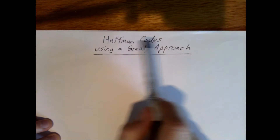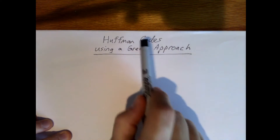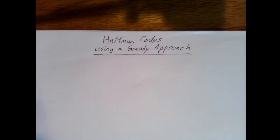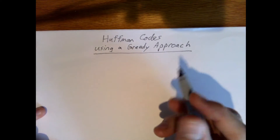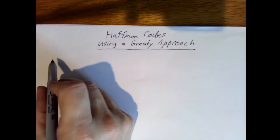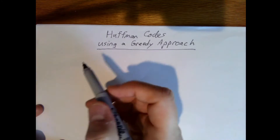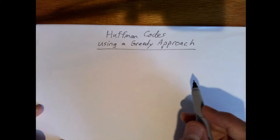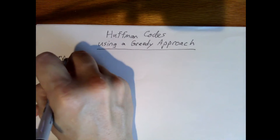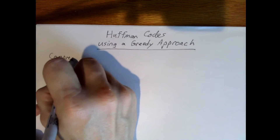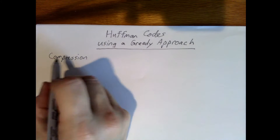Now let's talk about producing Huffman codes. We'll use a greedy approach to producing the codes, but first let's look at the background to see what this is all about. There are many times that we would like to save disk space or reduce the amount of information being transmitted over a network by compressing files, so we want to perform compression.